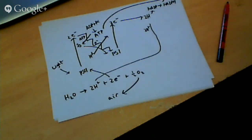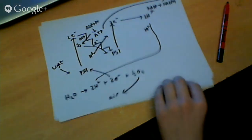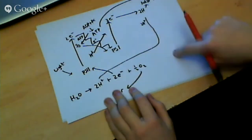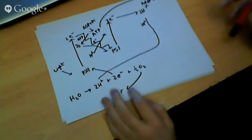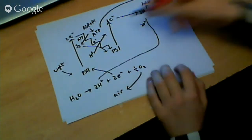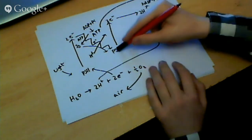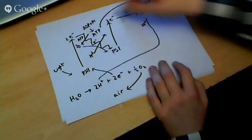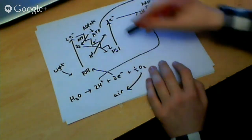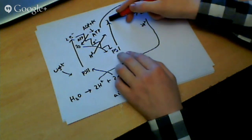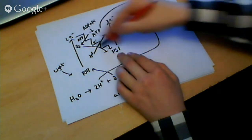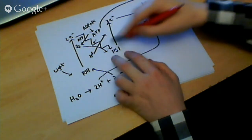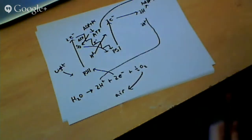Just to clarify — someone wants to know the difference: this is non-cyclic. Cyclic photophosphorylation just goes from photosystem 1 releasing 2 electrons, which then go down the transport chain producing some ATP back into photosystem 1.